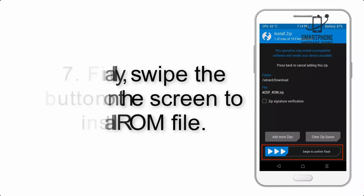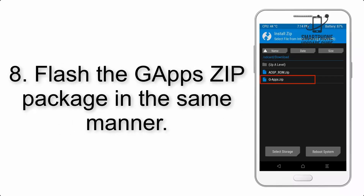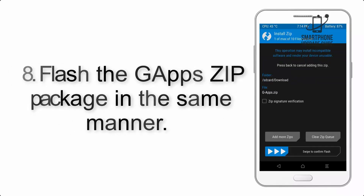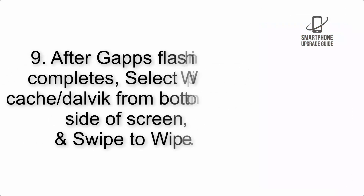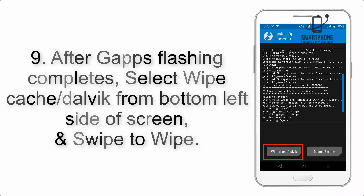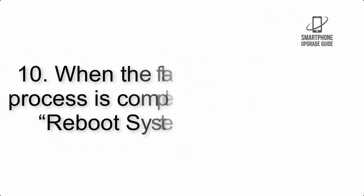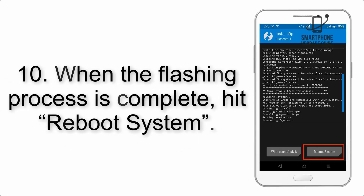Step 7: Swipe the button on the screen to install the ROM file. Step 8: Flash the G apps zip package in the same manner. Step 9: After G apps flashing completes, select Wipe Cache and Dalvik from the bottom left side of the screen and swipe to wipe.